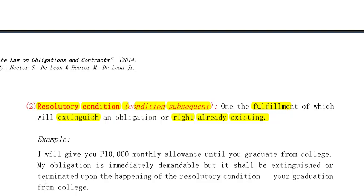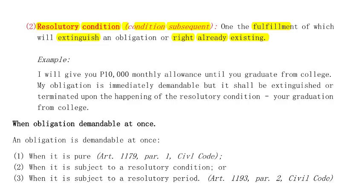You automatically already have the right to demand delivery of the car and use it. But if you would marry Gerald Anderson, you would lose the right to use my car because the condition is already fulfilled. To summarize under Article 1179, an obligation is demandable at once when it is pure under the first paragraph, or subject to a resolutory condition, or subject to a resolutory period under Article 1193, which we will be discussing further. And that concludes Article 1179. Let's continue on to Article 1180.